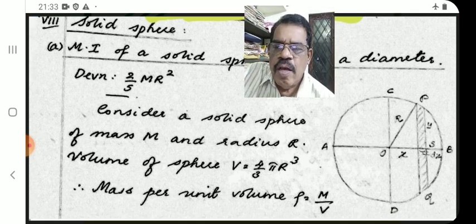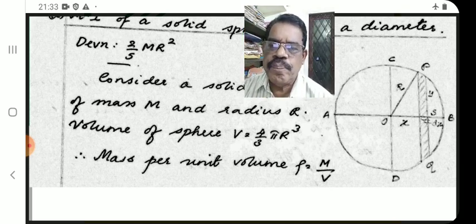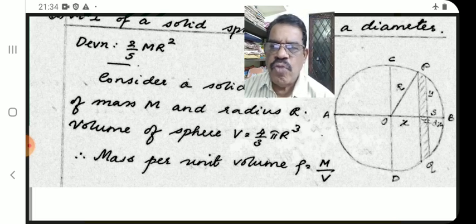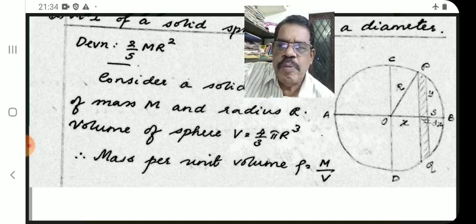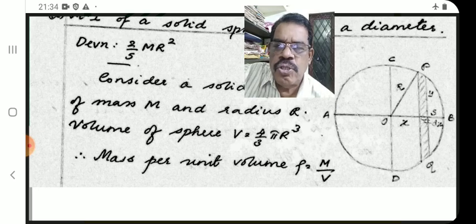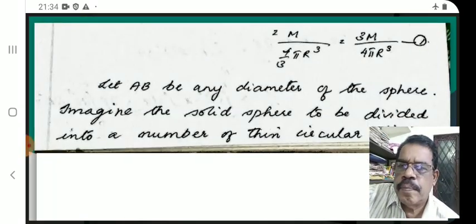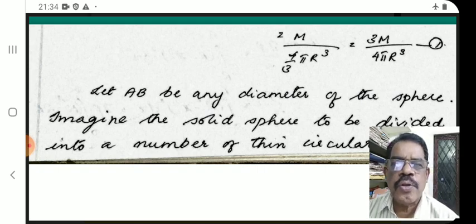We define mass per unit volume as density rho, where rho = m/v. For a uniform rod we use mass per length; for a uniform disc, mass per area; and here, mass per volume is defined as density rho = m/V = m / (4/3 π R³), that is rho = 3m / (4πR³). This is equation number one.